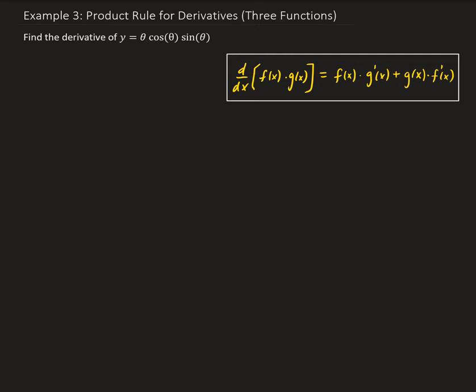In order to apply the product rule here, what we have to do is assign two of the functions to one variable and the other one is left for the other variable. So we're going to call this capital F of θ, and this one we can call capital G of θ. So now y has been written in the form of F of θ times G of θ, where F of θ is θ times cosine θ.